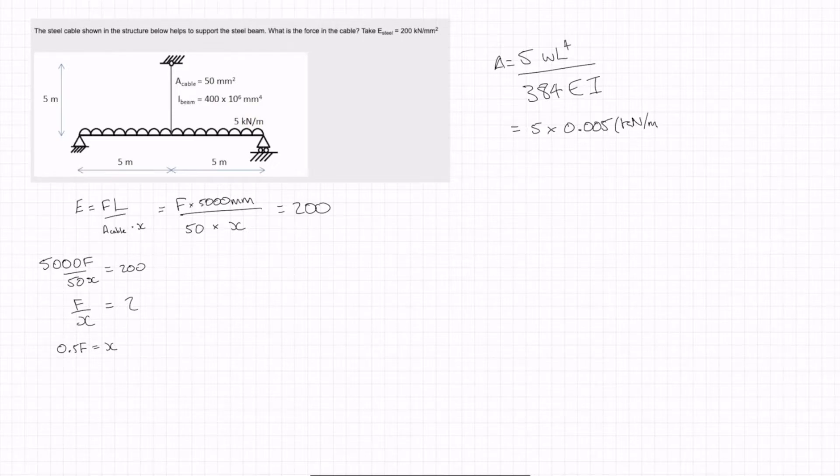Times L to the 4. L is the entire length of that beam so that's 10,000 millimetres. All over 384 times 200 times I is that 400 times 10 to the 6. So that's equal to delta.